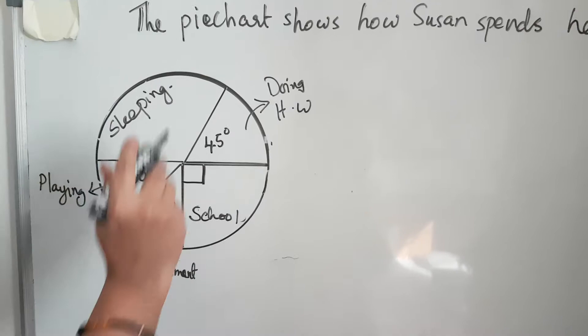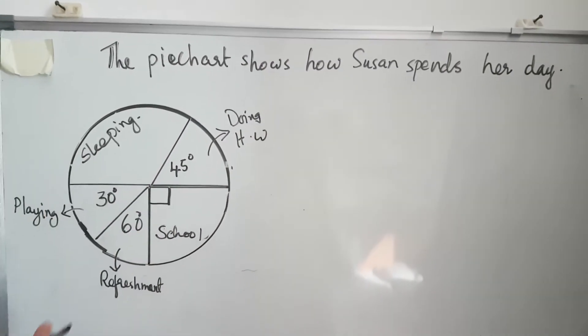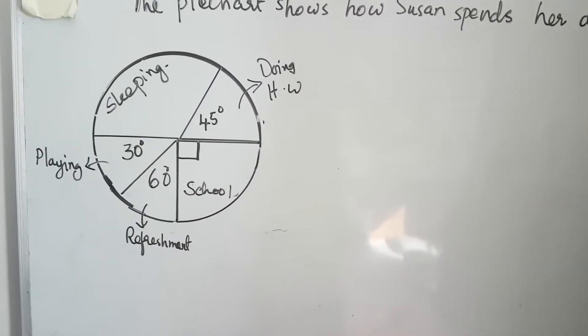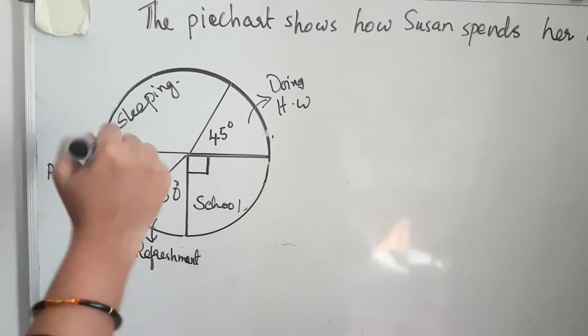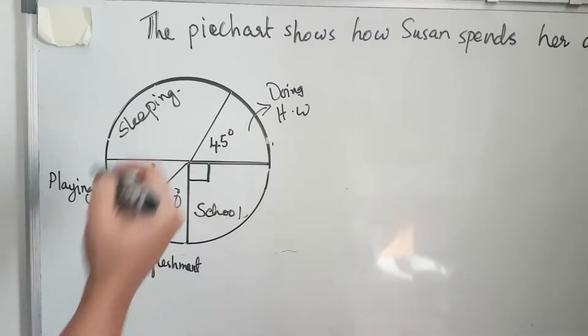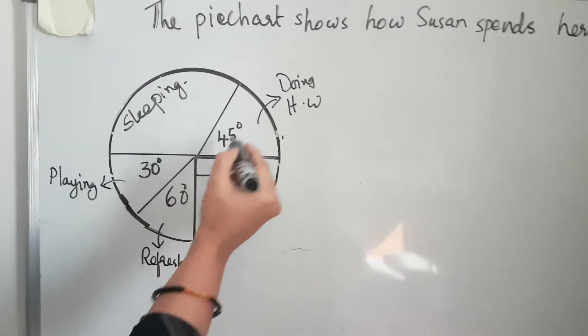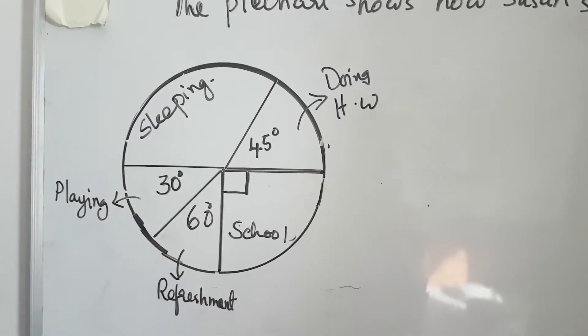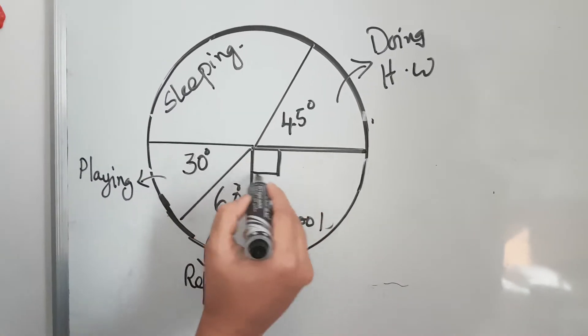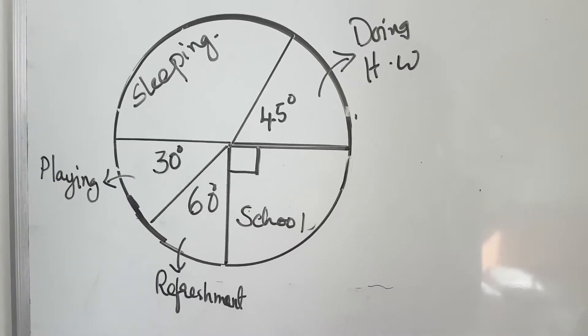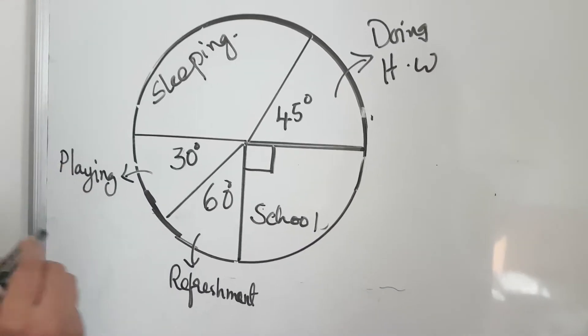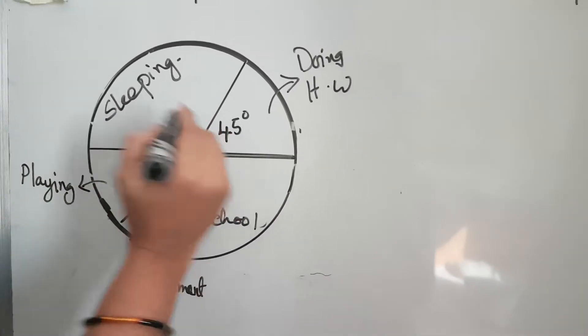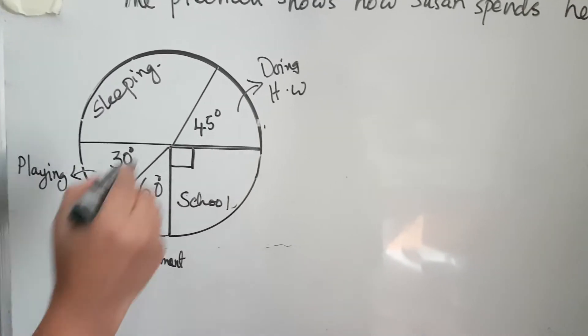Each sector—we call it a sector—represents one activity. You can see here there's a 45-degree angle for doing homework, then this is a right angle, that means 90 degrees, representing school, then refreshment, playing, and sleeping. No angle is given for sleeping, but if we have the other angles, we can find the angle representing sleeping.